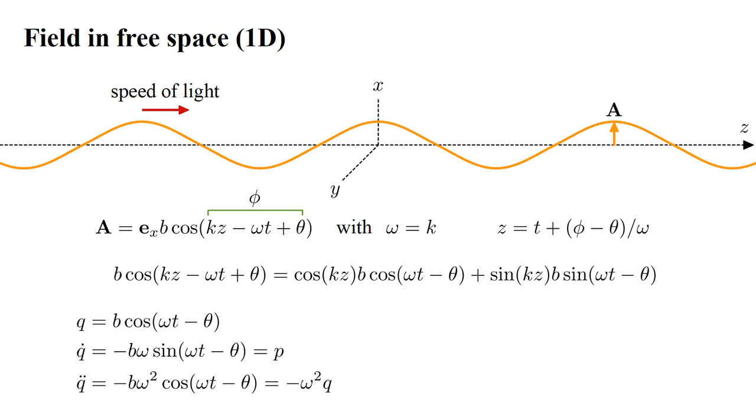By analogy with a unit mass harmonic oscillator, let's consider q̇ analogous to a momentum p. Then we can write the vector potential, A, as unit vector e_x times the quantity [q cos(kz) - (1/ω)p sin(kz)].